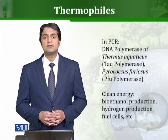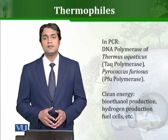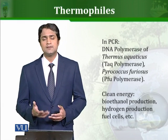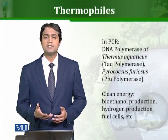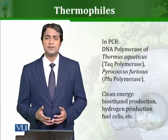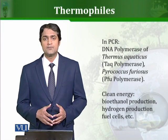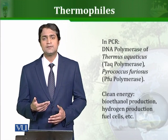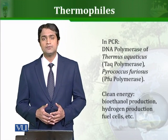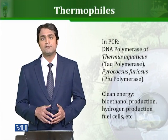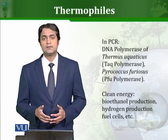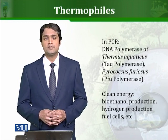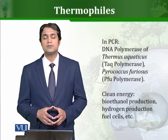The most pronounced application of thermophiles is the use of Taq polymerase in PCR reactions. Taq stands for Thermus aquaticus, a hyperthermophile whose DNA polymerase enzyme can resist high temperatures. In PCR, temperatures around 94–95 degrees Celsius are used for denaturation of DNA. Normal mesophilic enzymes cannot survive at these temperatures, so early PCR required adding new enzyme at every cycle, making the process laborious. With the discovery of Taq polymerase, the PCR process became automated.